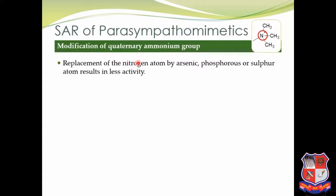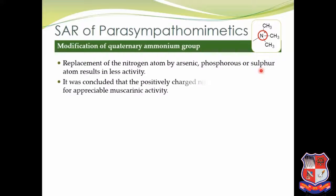First, replacement of the nitrogen atom by arsenic, phosphorus, or sulfur atom results in less activity. This nitrogen is replaced by arsenic, phosphorus, or sulfur — however, it gives less activity. From this it is concluded that a positively charged nitrogen atom is required for appreciable muscarinic activity.